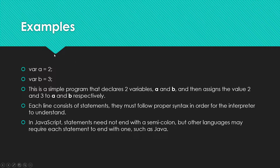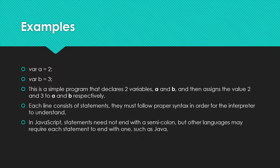Some examples of programming statements: we have var a equals 2, var b equals 3. This would be a simple program that declares two variables, a and b, and assigns the value 2 to a and the value 3 to b. Each line consists of statements, and they must follow their proper syntax in order for the interpreter to understand. In many statically typed languages, the language requires every programming statement to end with a semicolon — kind of like in an English sentence, every sentence must end with a period.